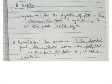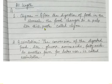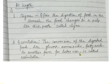At length section: A1 and A2 are related. What is chyme? After digestion of food in the stomach, the food changes to a pulp-like thick paste called chyme. What is assimilation? The conversion of digested food — like glucose, amino acids, and fatty acids — into another form for later use is called assimilation.